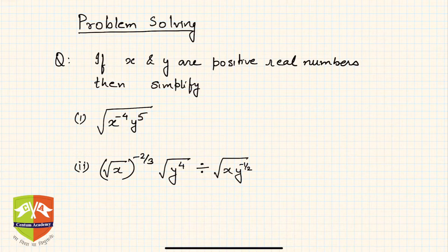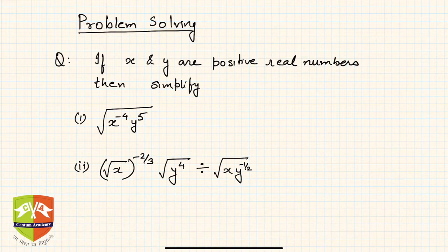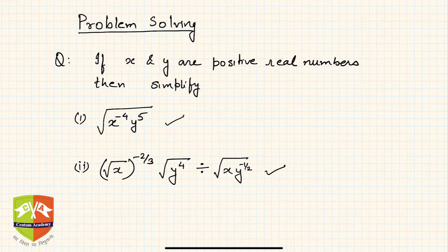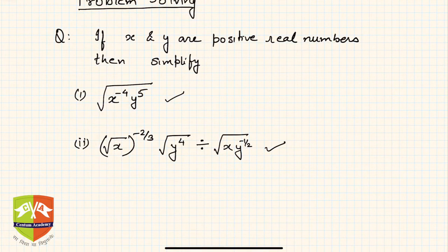Hi friends, how are you? I hope you are enjoying mathematics. Continuing with our problem-solving sessions, this is another session where we are going to discuss two questions. Given that x and y are positive real numbers, you have to simplify: the square root of x to the power minus 4 times y to the power 5. The second one looks intimidating, but don't worry — you'll be able to solve it using the laws of exponents.